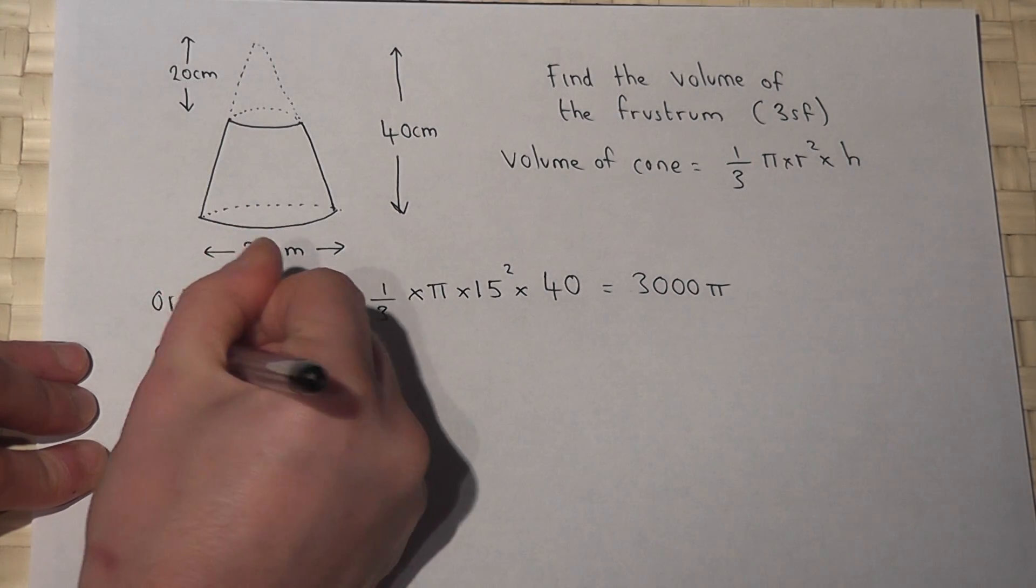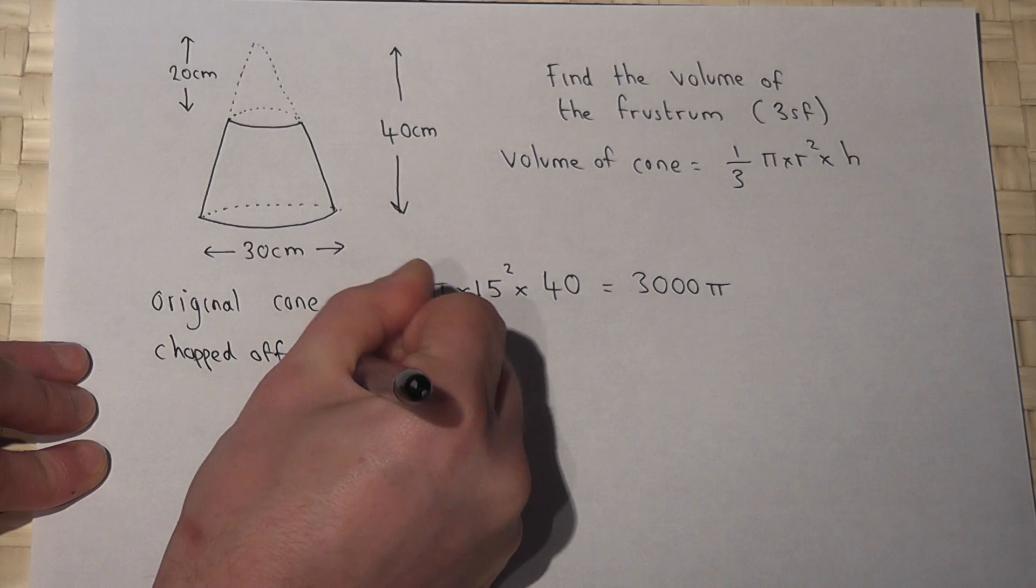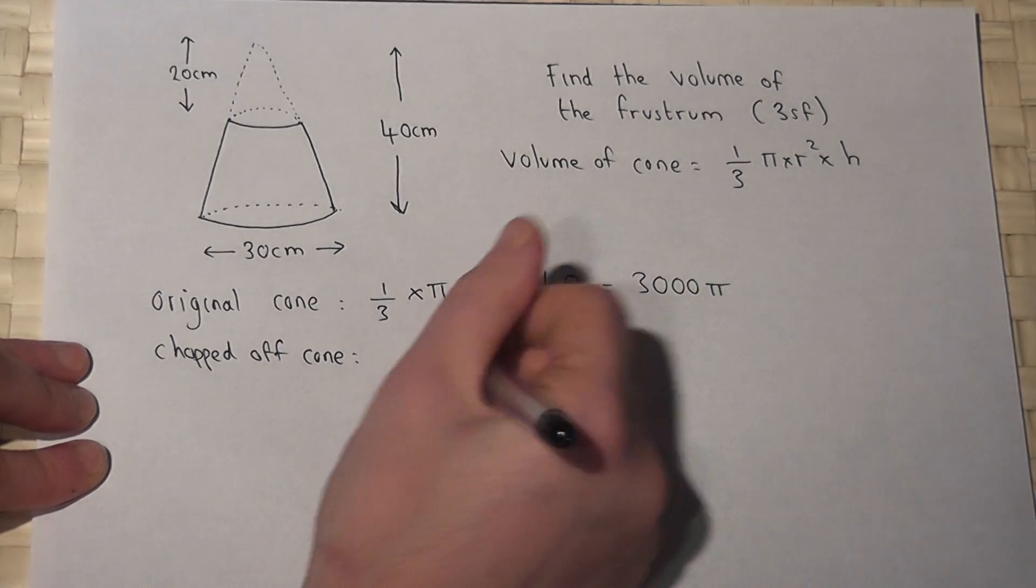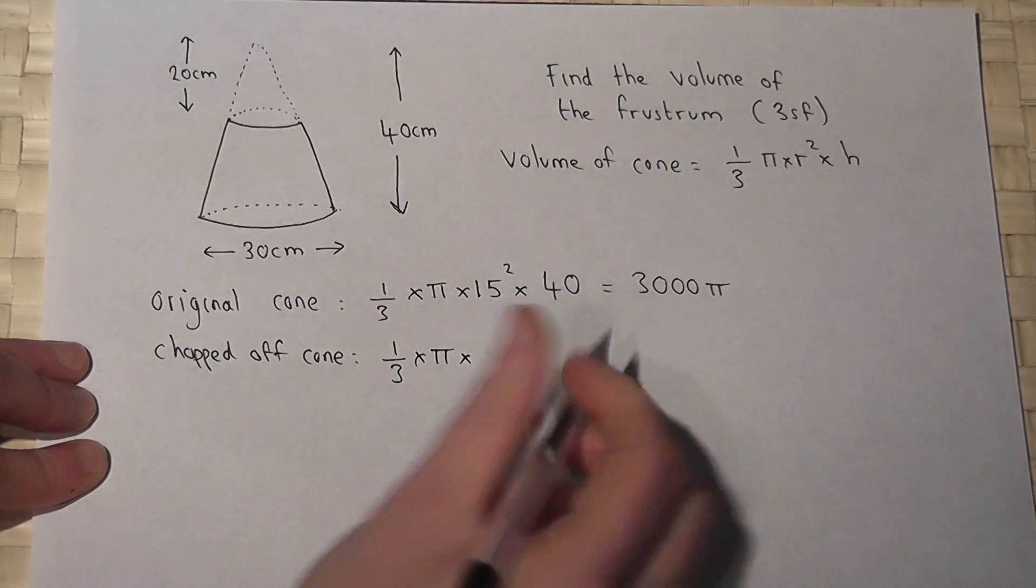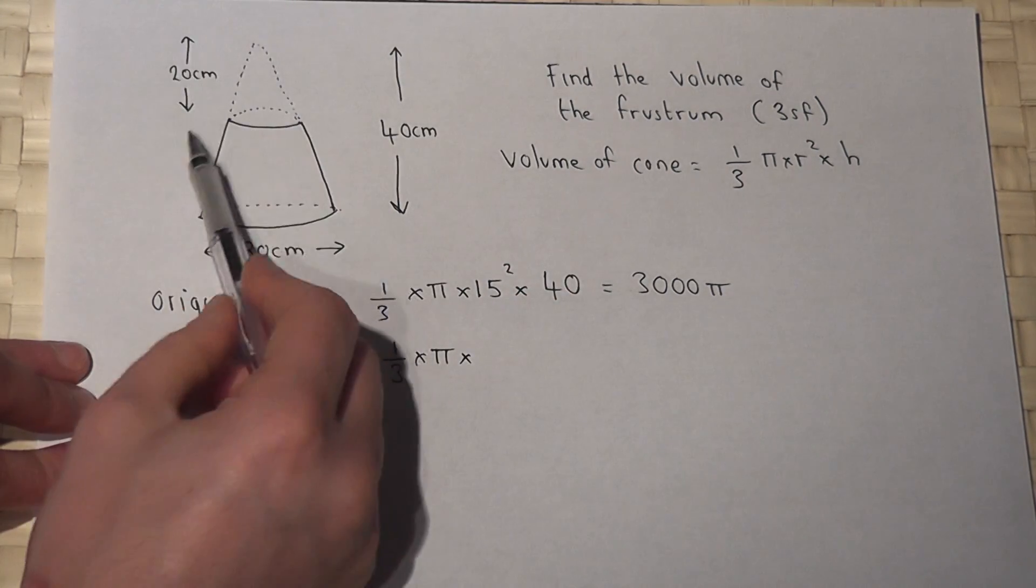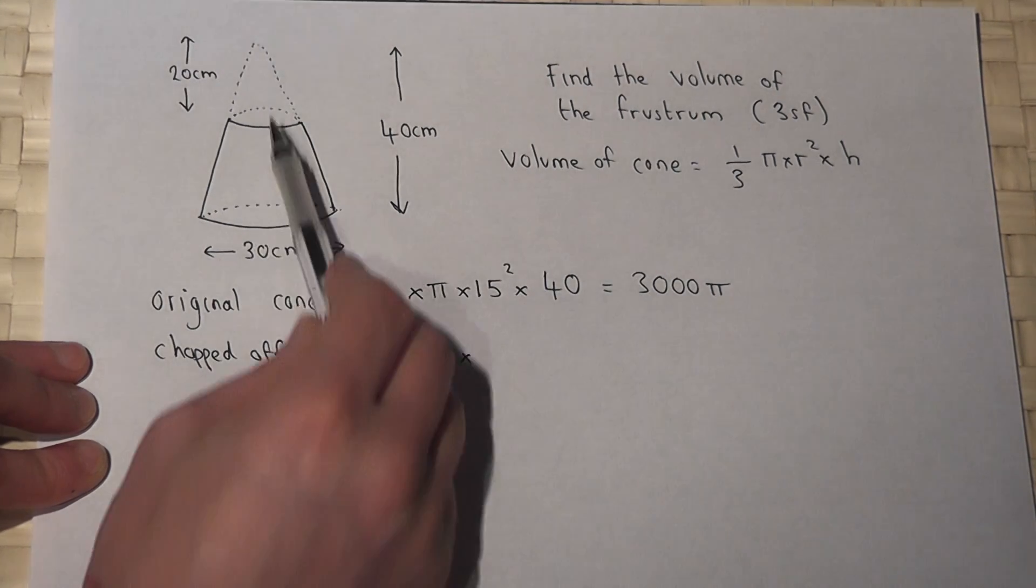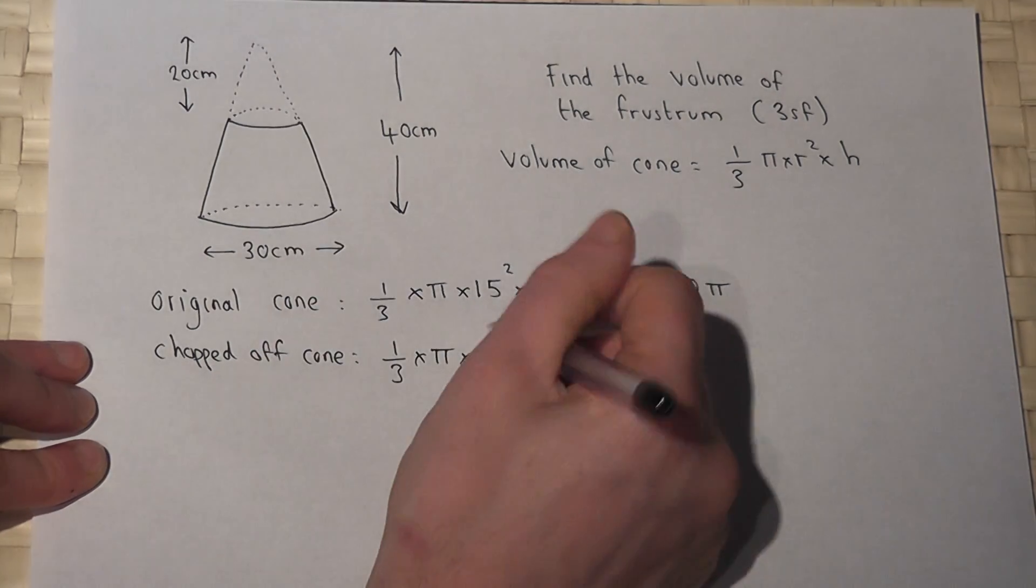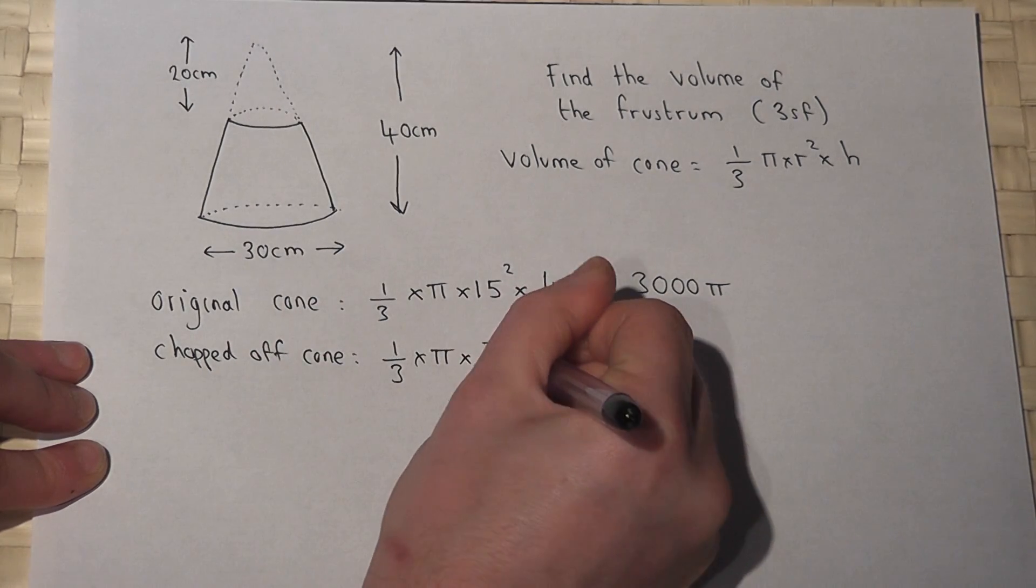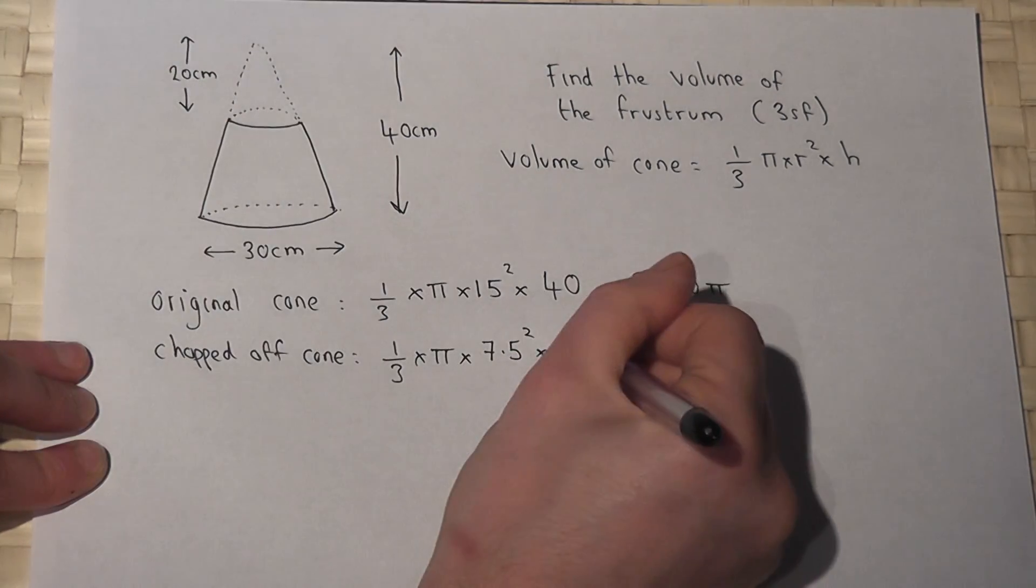So let's look at the chopped off cone and let's map it very carefully. It's still a third, it's still pi. However, because this was the top half chopped off, rather than having a radius of 15 it will have half the radius. So 15 divided by 2 is 7.5, and its height was 20.